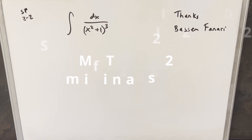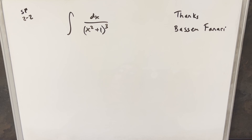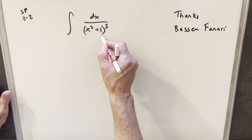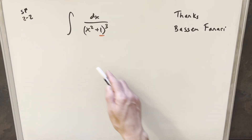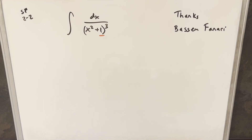We have here today another integral on the board. This one's from the MIT Integration Bee semifinals round two, problem two. We have the integral of dx over x squared plus one, all cubed. When I was doing this, the first thing I noticed is I did something really similar in a video not long ago — I think there was just a four there instead of a one. I'll provide a link to that video. For that one, I did a trig substitution and that worked out fine.